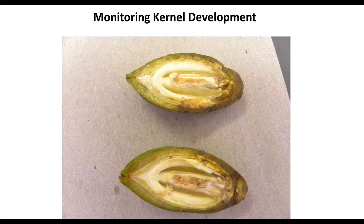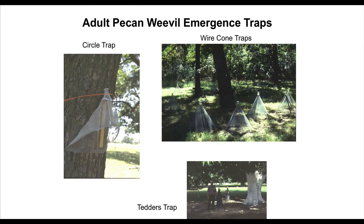We monitor the kernel development for when dough formation starts near the tip of the nut — this is when a female can successfully lay eggs. We use adult emergence traps to monitor the emergence of adults. Our primary traps are the circle trap, wire cone traps, and Tetter's traps.